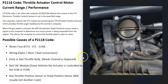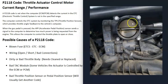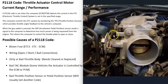Modern vehicles have what's called a throttle body that controls all the air going into the engine. It controls how much air enters the engine with a throttle body plate that opens and closes.